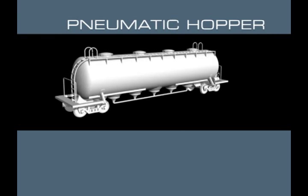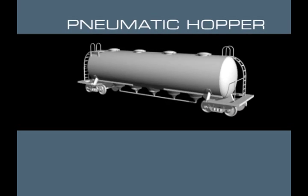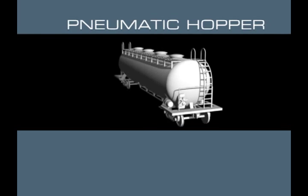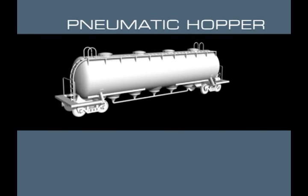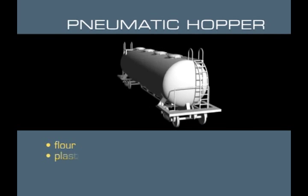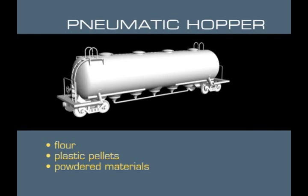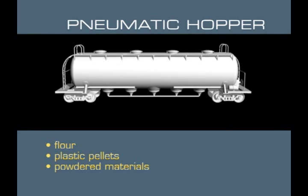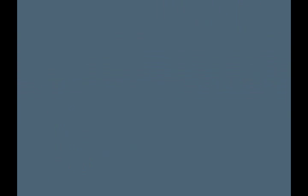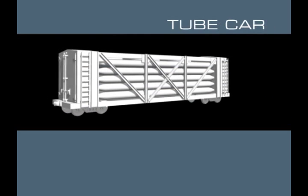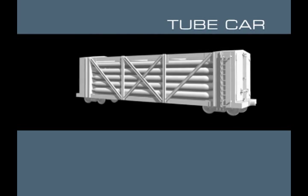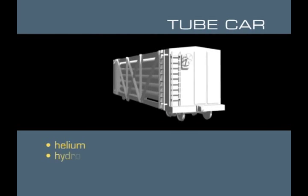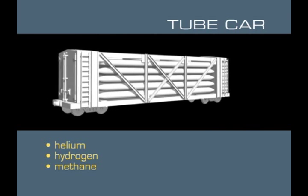Other car types do not use a DOT marking at all, but still contain hazardous materials. One of these is the pneumatically unloaded hopper car, which carries flour, plastic pellets, and a variety of powdered materials — some of which may be hazardous. Another unmarked rail car is the tube car, which holds tubes within a wooden or metal housing and carries helium, hydrogen, and methane that may pose an explosion risk.